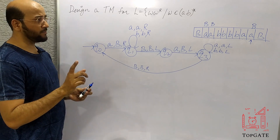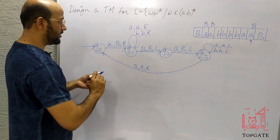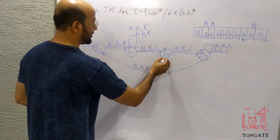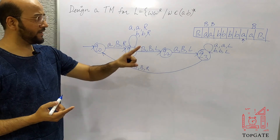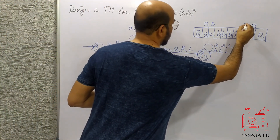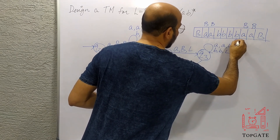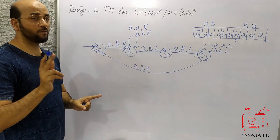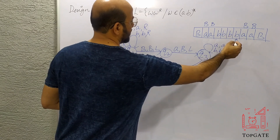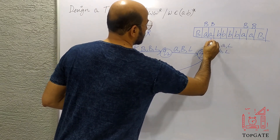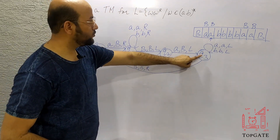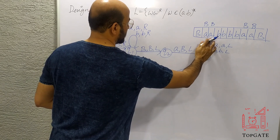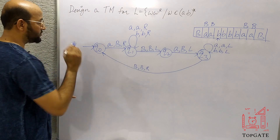At Q1, finding B, we keep it as B and move left. The pointer moves to the next A. At Q2, we change that A to blank and move left to Q3. At Q3, we skip all the B's going left via the self loop, and the pointer stops at the leftmost B. Then from Q3, finding B, we keep it as B and move right, returning to Q0.